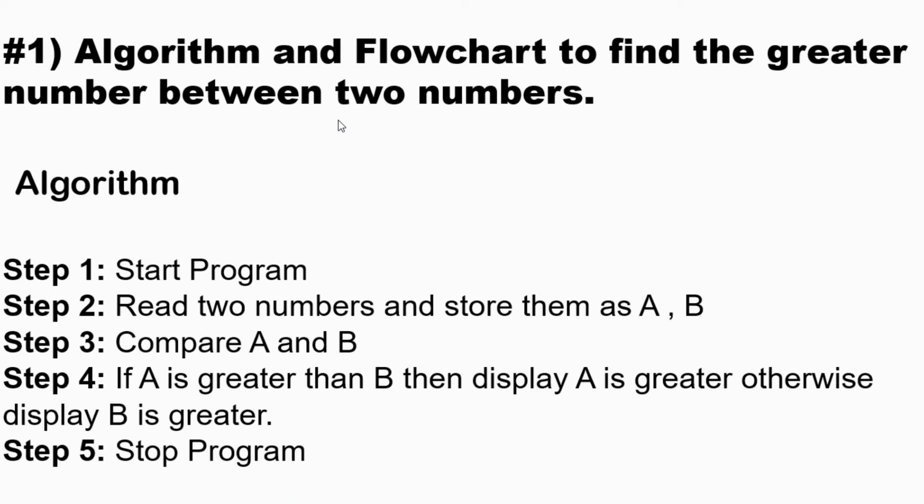Let's start with the algorithm. Step 1: start program. Step 2: read two numbers and store them as A and B. Step 3: compare A and B. Step 4: if A is greater than B, then display 'A is greater', otherwise display 'B is greater'. Step 5: stop program.